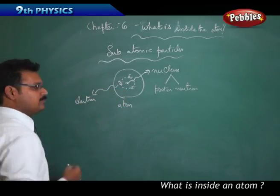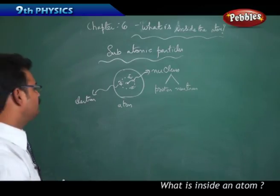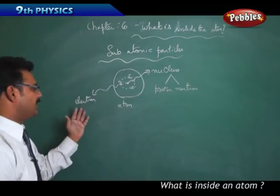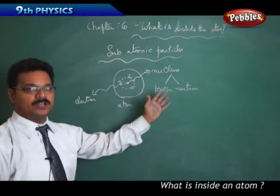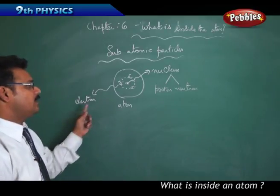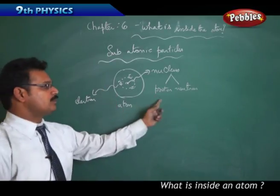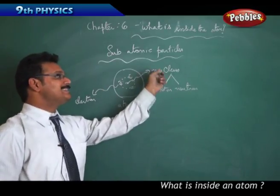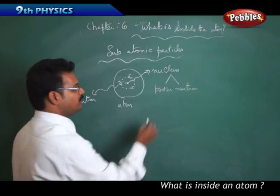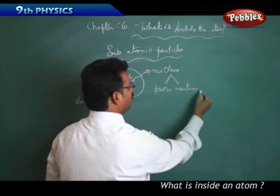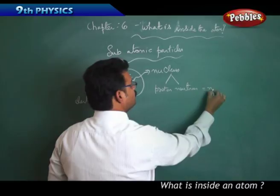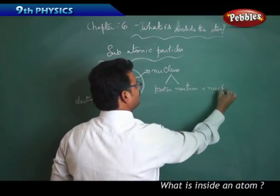So they found three types of particles: electron, proton, and neutron. Proton and neutron are also called nucleons, because they are the particles inside the nucleus.